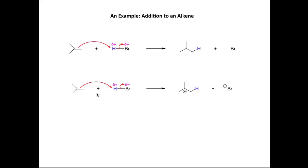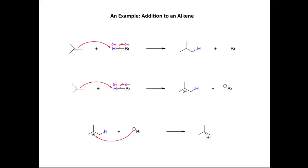Overall, we have two neutral reactants and two products that are neutral overall. The final step is the negatively charged bromide ion attacking the carbocation, forming the new carbon-bromine bond in the product.